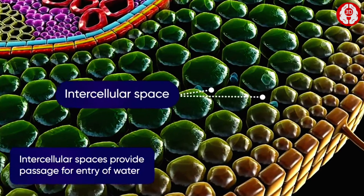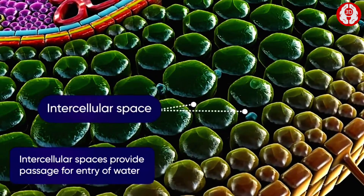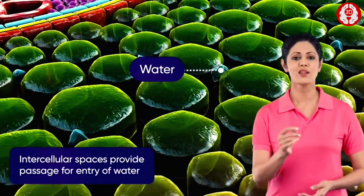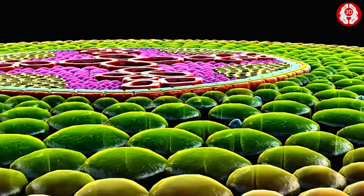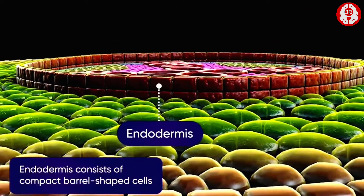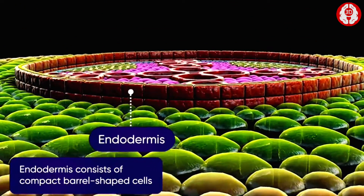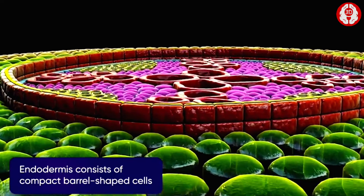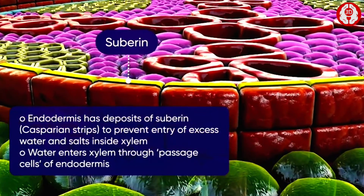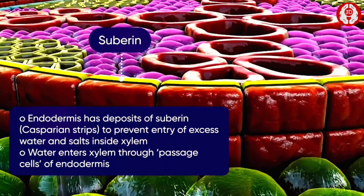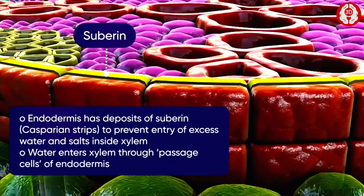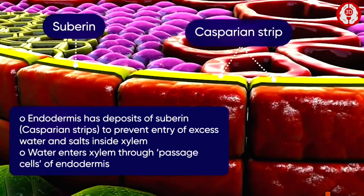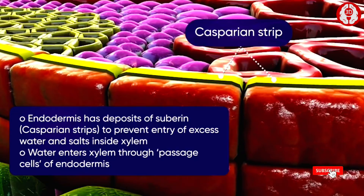Large intercellular spaces are present which help in the diffusion of water in the cortical cells. The endodermis consists of barrel-shaped, compact cells that have thick deposition of suberin over them, which is characteristic of endodermal cells and is known as the casparian strip.